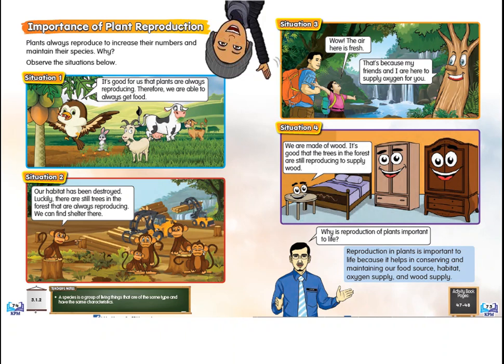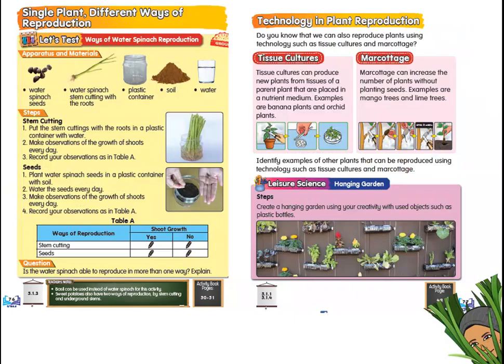Next page — this is also very important for you to know and remember: why is it important for us to know about plant reproduction? There are four situations here. I think you remember the quiz we tried before. Now, page 76 covers the different ways of reproduction for one type of plant.